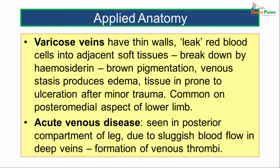Varicose veins have thin walls. There is leakage of red blood cells into the adjacent soft tissues and breakdown of hemosiderin giving rise to brown pigmentation. The persistent venous stasis produces edema or increased tissue fluid, and such tissues are prone to ulceration following minor trauma. This is commonly seen on the posteromedial aspect of the lower limb — which is what was seen in our case scenario with dilated tortuous veins on the posteromedial aspect.